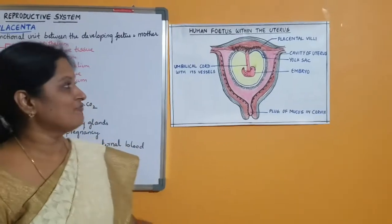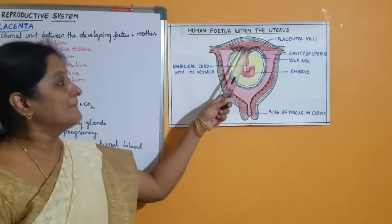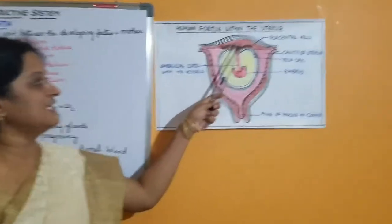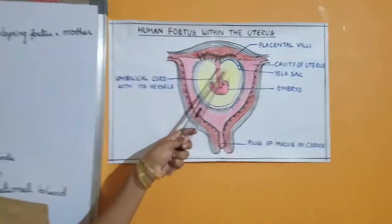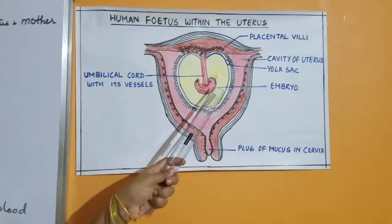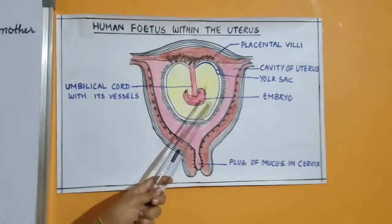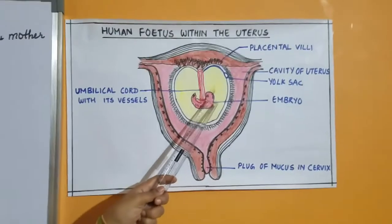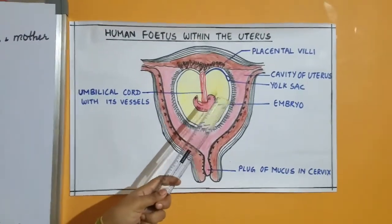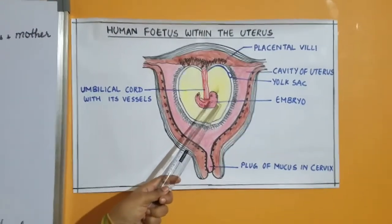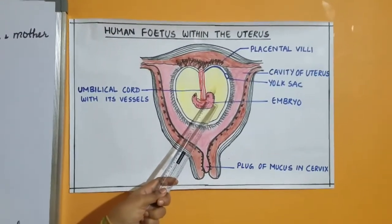Functions of placenta: The placenta facilitates the transport of oxygen and nutrients to the developing embryo and brings about the removal of carbon dioxide and excretory waste from the embryo.